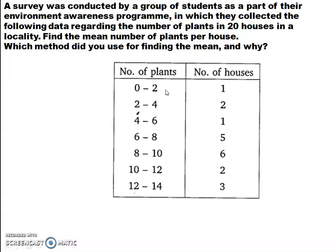Here, let's go through the data. Number of plants 0 to 2, 2 to 4, 4 to 6, 6 to 8, 8 to 10, 10 to 12, and 12 to 14. Here frequencies are 1, 2, 1, 5, 6, 2, 3. These are extremely small numbers, isn't it? So, the method that you are going to use is direct mean method.